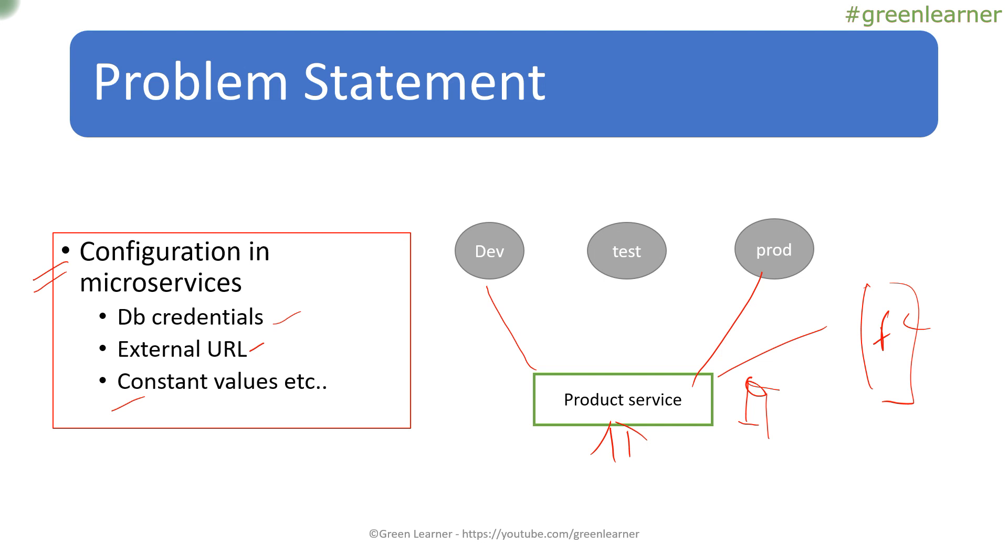How to decide which values are configurable and which are not? You should see how many values are changing based on the environment. Like I was moving from dev, test, prod. I saw that DB credentials and if there is any external URL, any external microservice to call, that is going to change and constant values, it might be different for the dev value, test value or production value. This is how you can see how many values are configurable in your microservice. So this is about the problem statement.